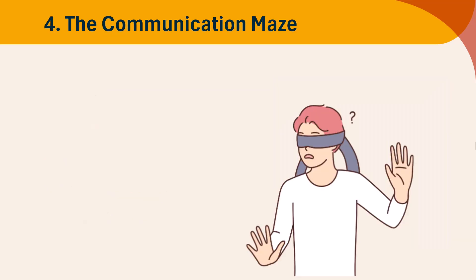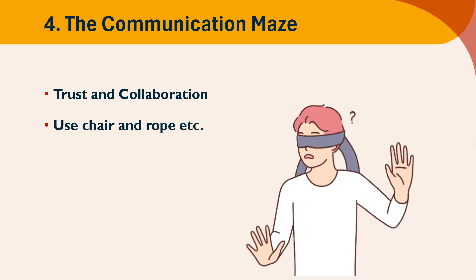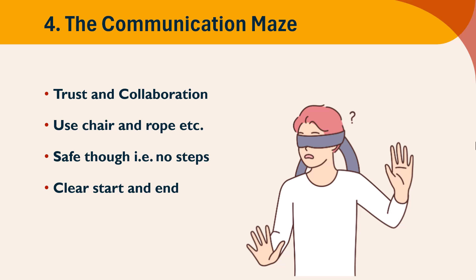Activity number four, The Communication Maze. This really involves trust, collaboration, and teamwork. As the training facilitator, you're going to use chairs, ropes, or whatever you've got to create a little maze. Make sure it's safe — no steps should be involved. Keep it on one flat floor, maybe one classroom or outdoors in a flat area with no dangerous obstacles. There needs to be a clear start and a clear end to the maze, so participants know where to start and what counts as success.